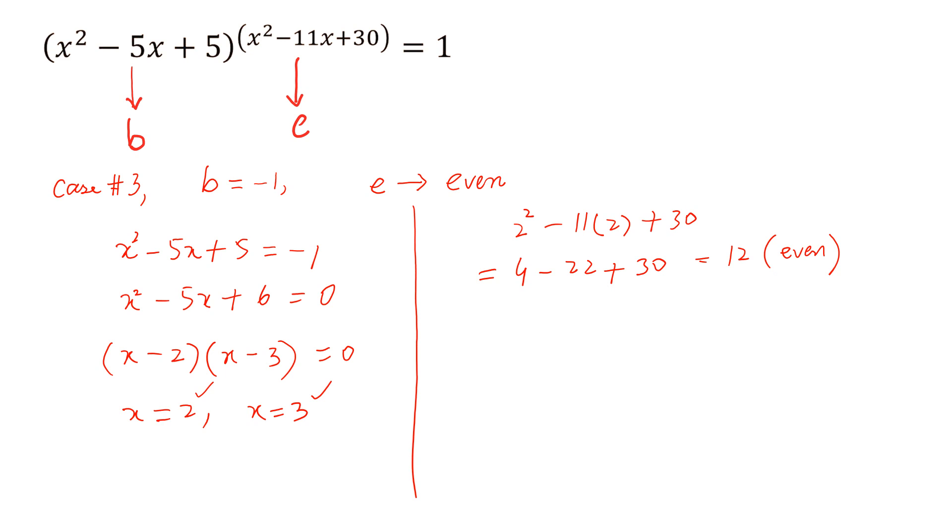Similarly, if we try for 3, so 3² - 11(3) + 30 and this is equal to 9 - 33 + 30 and 39 - 33 is 6 and this is also even. So the total solutions to these questions are 1, 2, 3, 4, 5, and 6 and this is the correct answer.